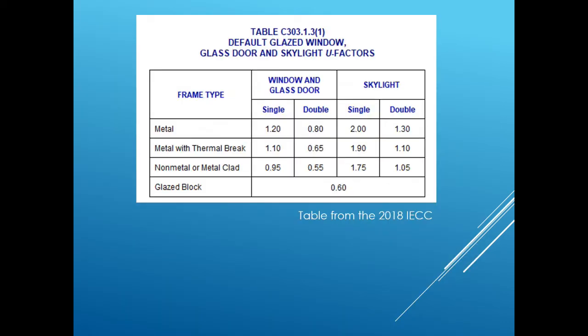If a compliance certificate is not provided during plan review, a default value must be assigned from table C303.1.3(1), which is the value used in COMcheck. As shown in that table, the default values are very undesirable, and insulation values in all other parts of the thermal envelope would have to increase to trade off for these values. I strongly encourage designers and plans examiners to push for the compliance certificate and the CMA certificate at the end, or at least during construction.